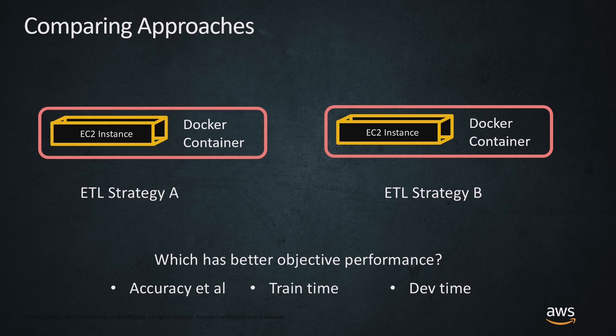You can look at accuracy, precision, recall, AUC - any objective metric you're interested in. You can also think about which one takes longer to train or which one takes longer to engineer. Dev time is expensive. Our time is valuable. If an ETL Strategy takes multiple days to write but is only getting you maybe one-tenth of a percentage point, is it really that valuable? Potentially not.